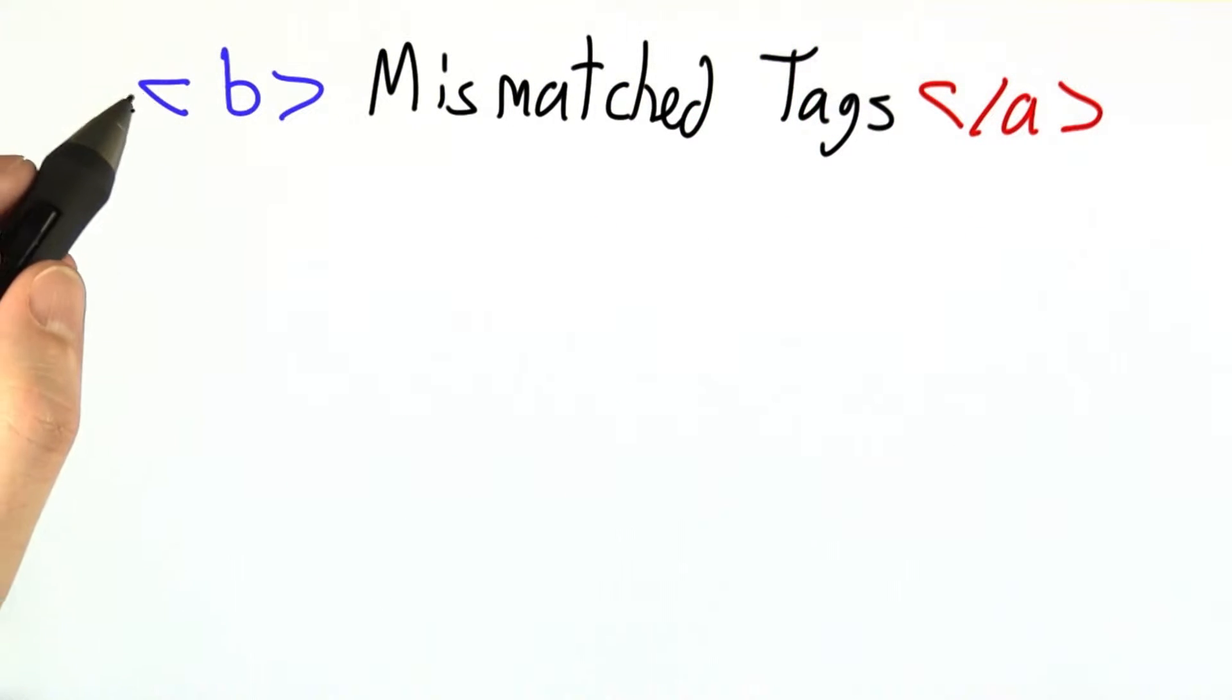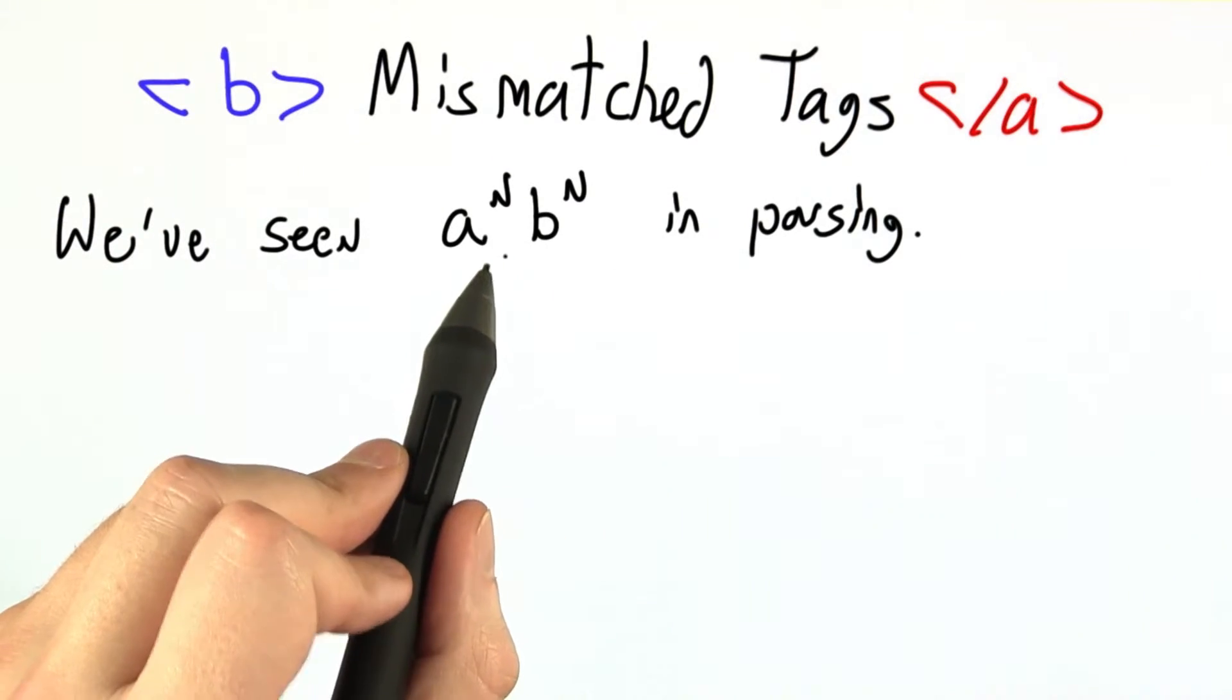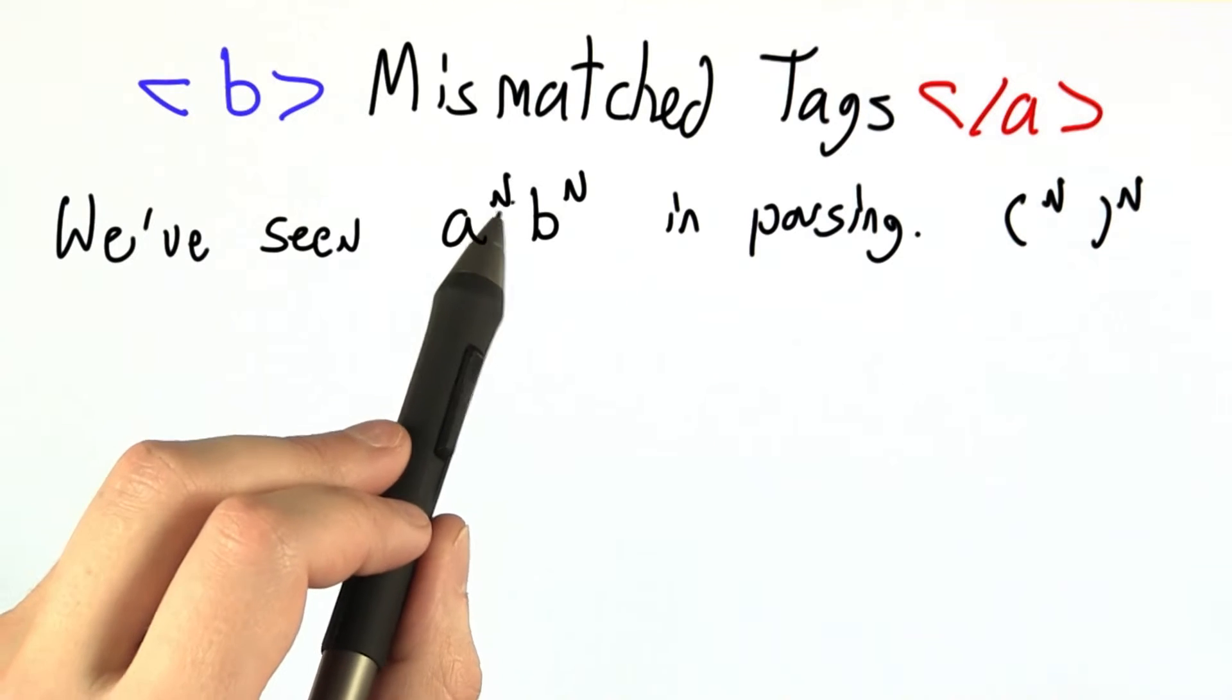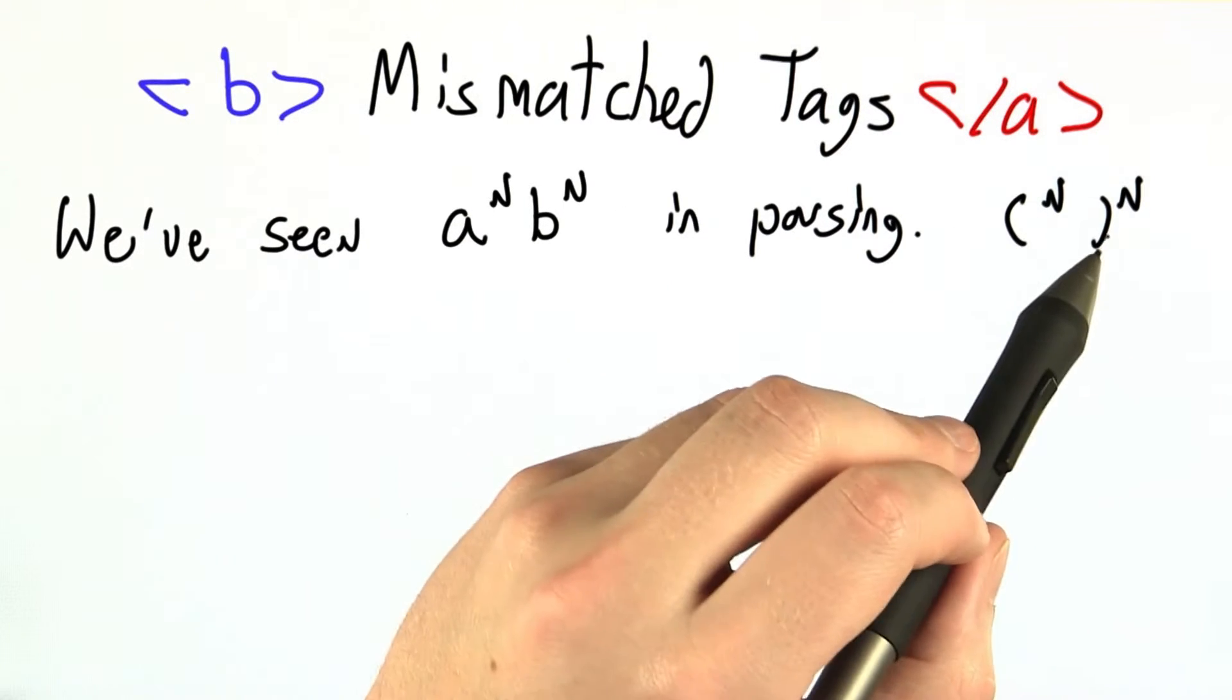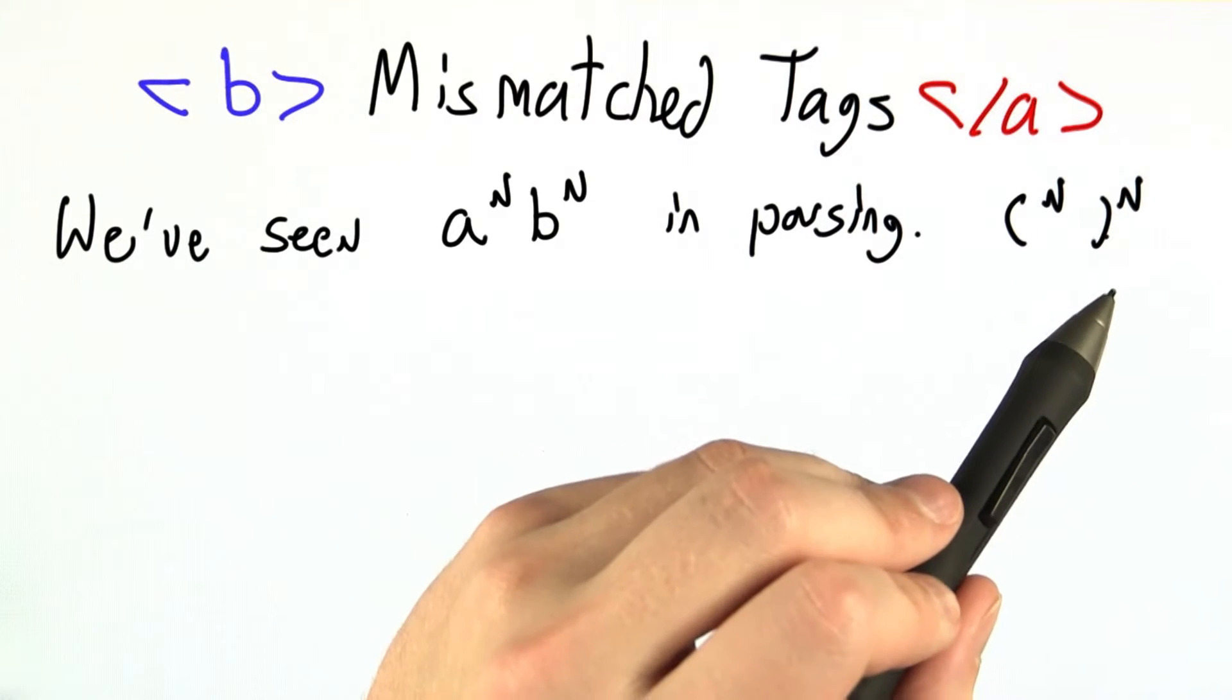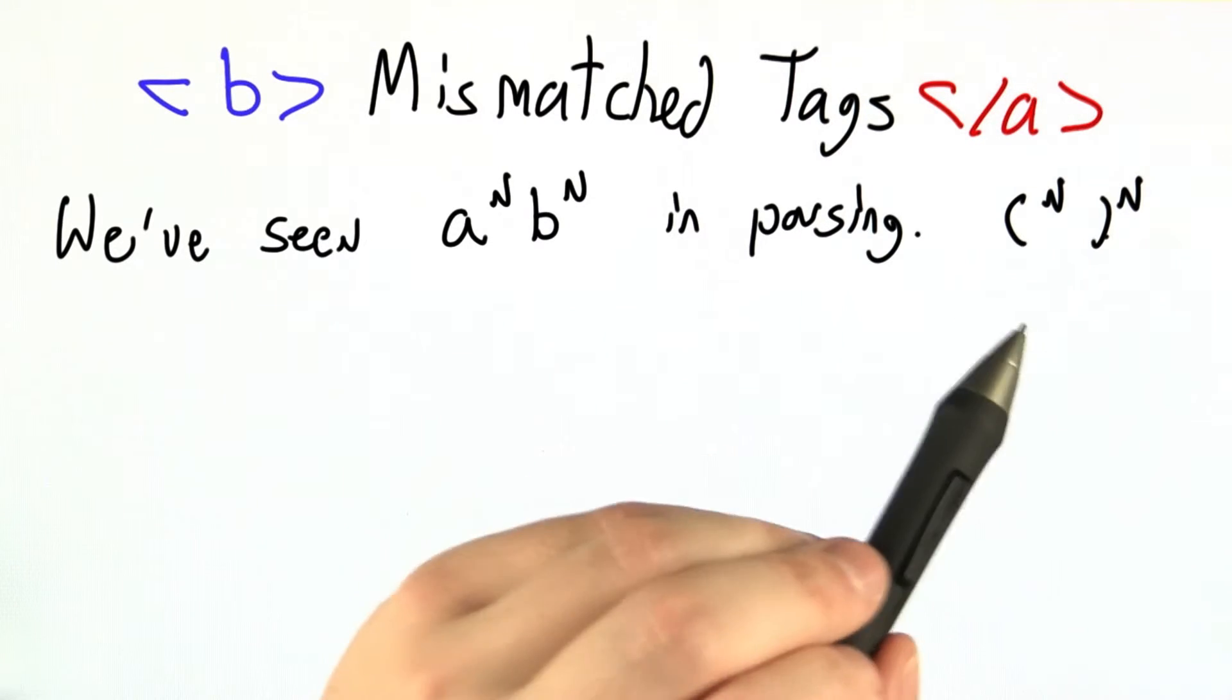Similarly, there's an error in HTML known as mismatched tags. We talked about balanced parentheses in parsing. The same number of As followed by the same number of Bs, or the same number of open parentheses followed by the same number of closed parentheses. Recall that's not something we can do with regular languages or regular expressions, but we can capture it with a context-free grammar.